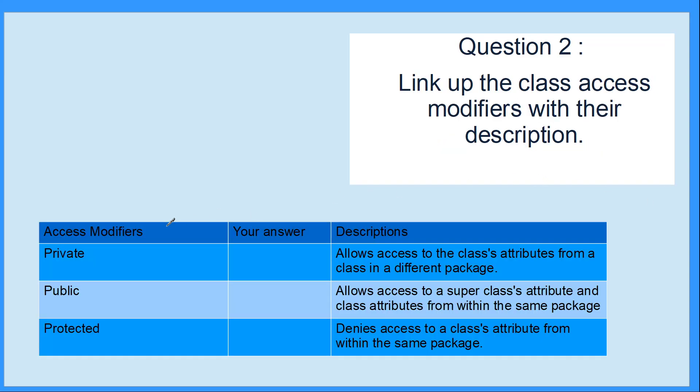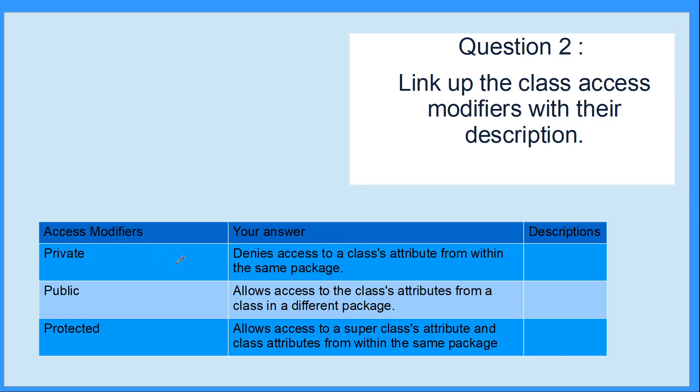Linking them up now, we have access modifiers. This is querying your knowledge about different packages and what attributes can be accessed when you have different access modifiers. Private means you can only access the class's attributes from within the same class. Public can be accessed anywhere - if it's in a different package, it'll still be allowed to be accessed. Protected means if you have a super class or parent class and the base class's attribute is set, this means the child class will be able to access that attribute. In addition, two classes from within the same package will also be able to access the protected access modifier.